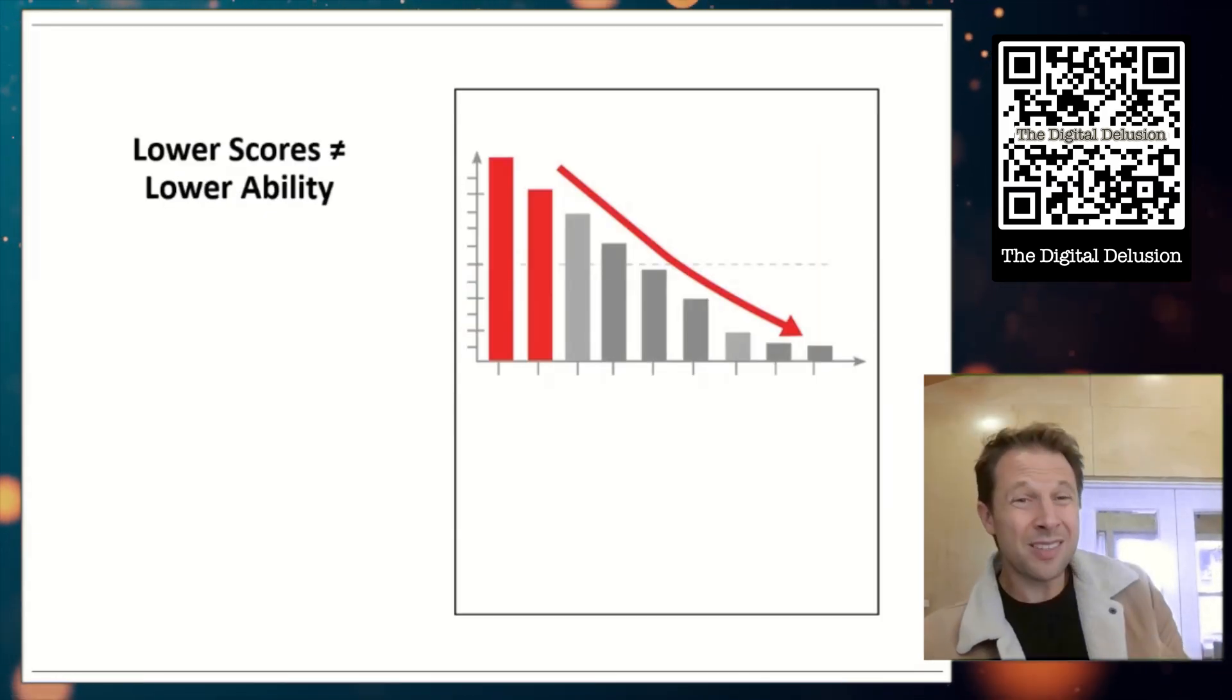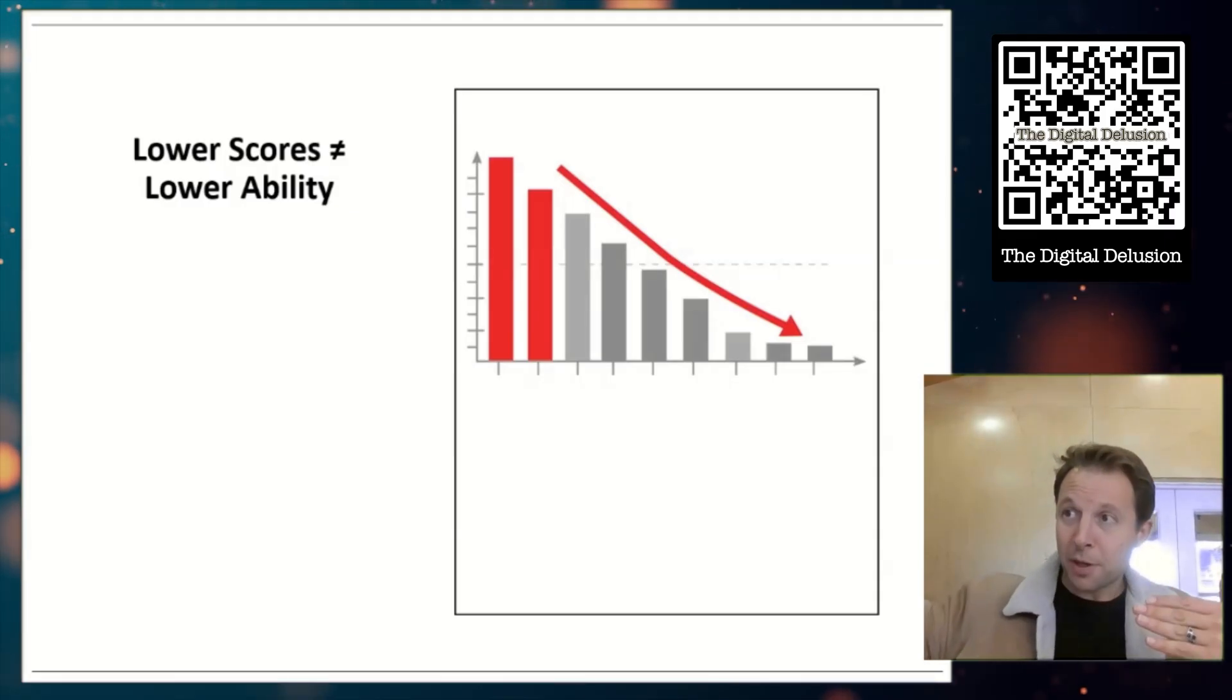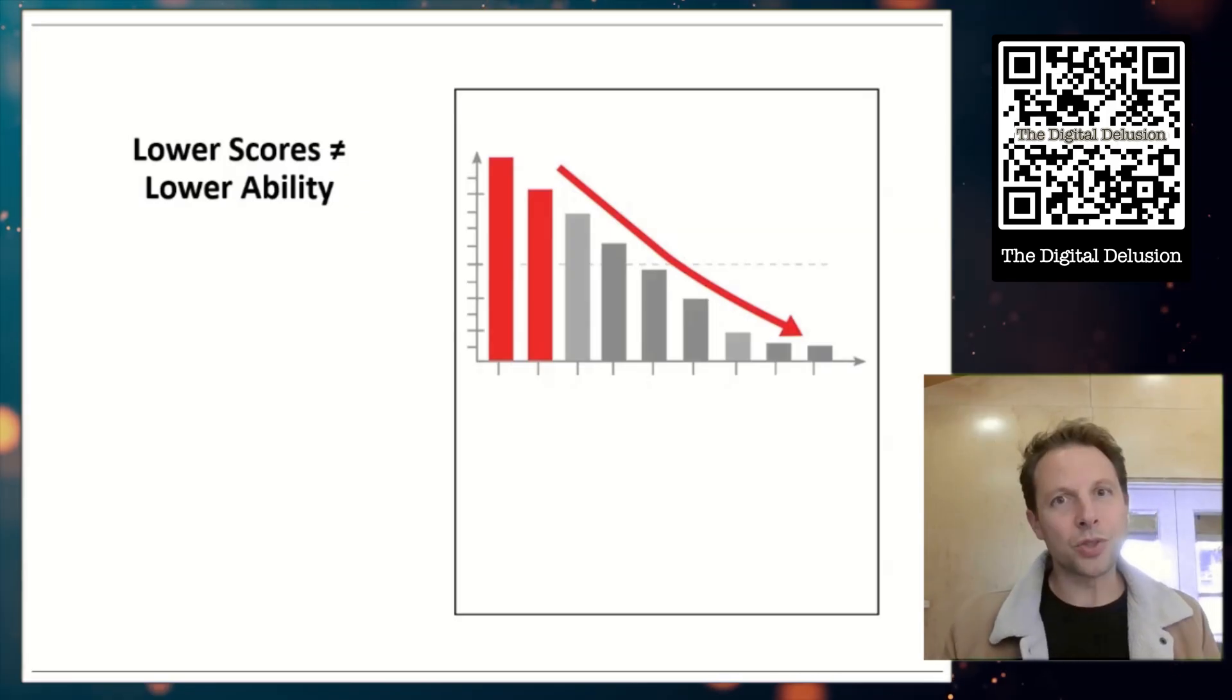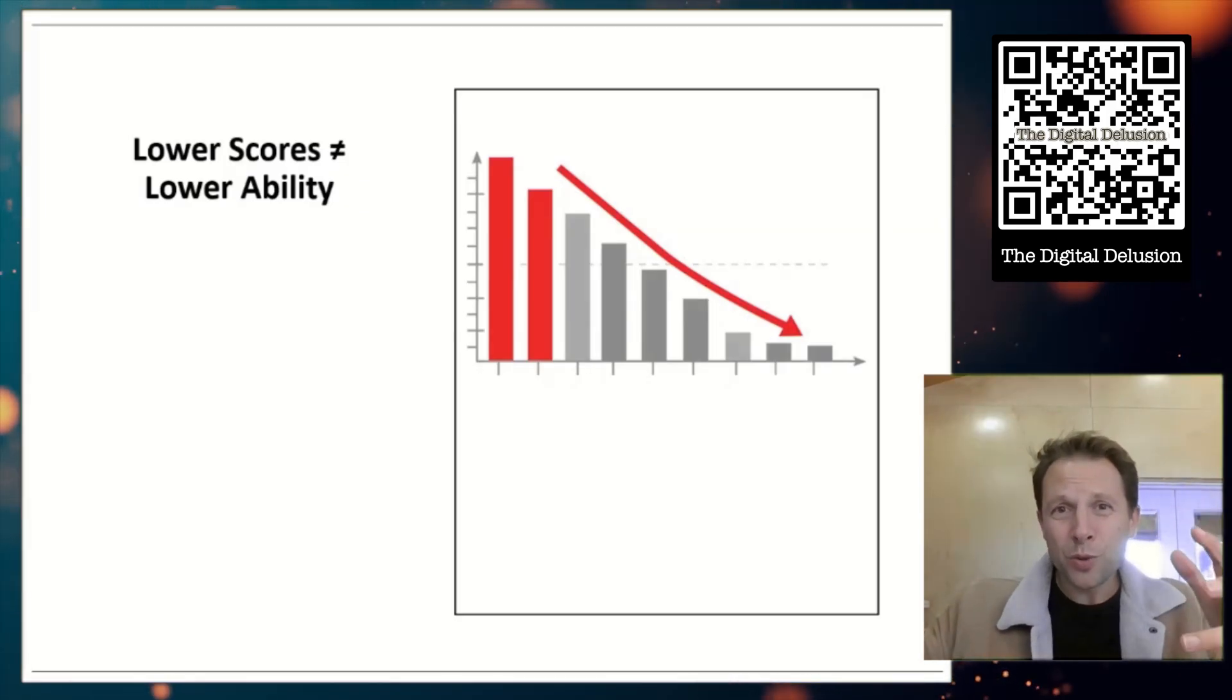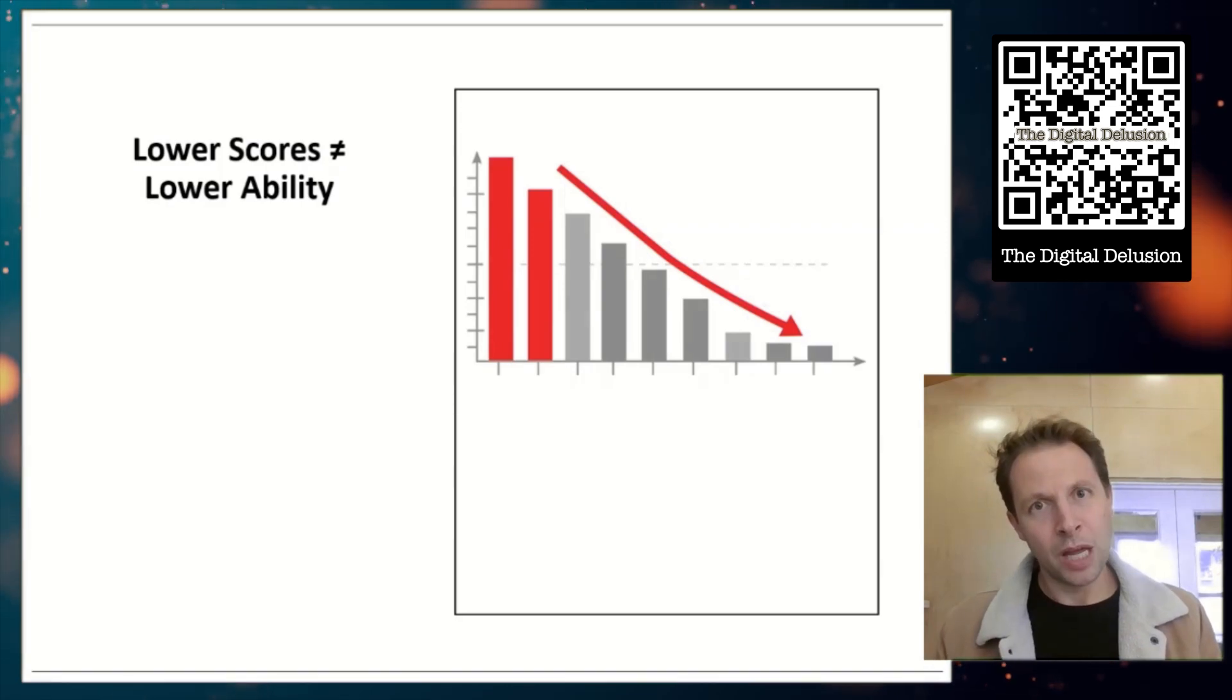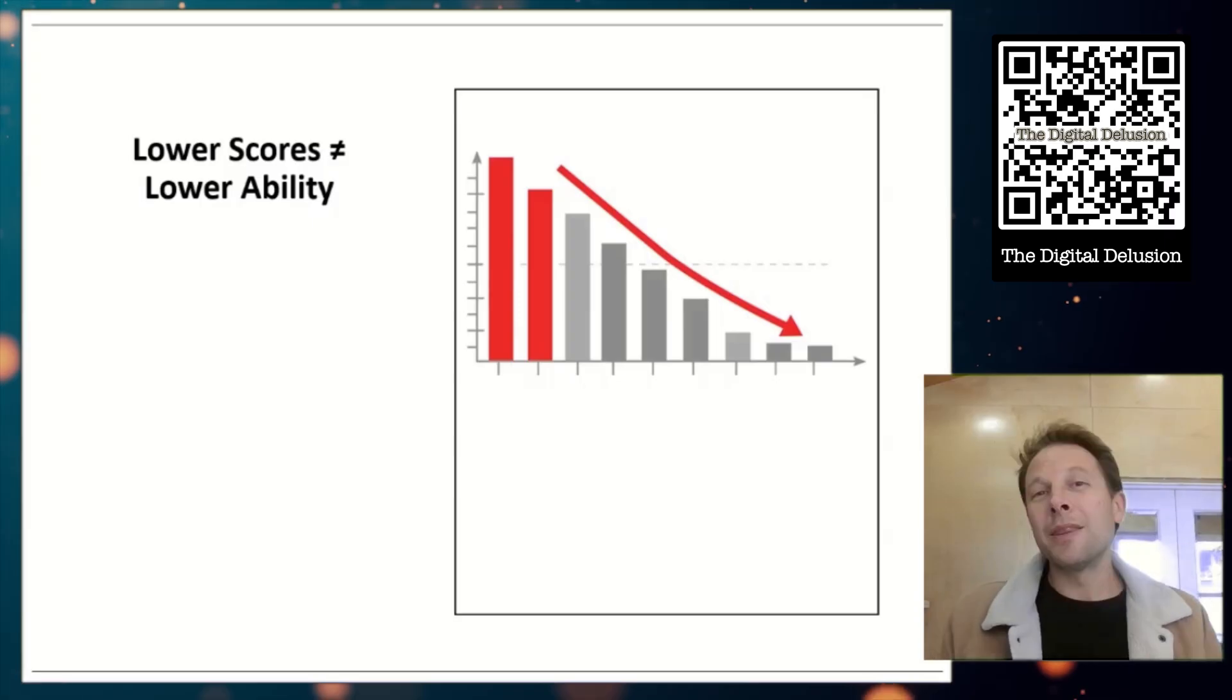The next thing is this. Lower scores doesn't necessarily mean lower ability. As we've seen, when kids move from paper to screens, their scores drop, but it's unlikely that means their abilities drop. It just means that the medium we're using isn't giving them the chance to demonstrate what they can actually do. So sometimes when we see score drops across grade levels, across years, across districts, that might not necessarily mean a learning drop.